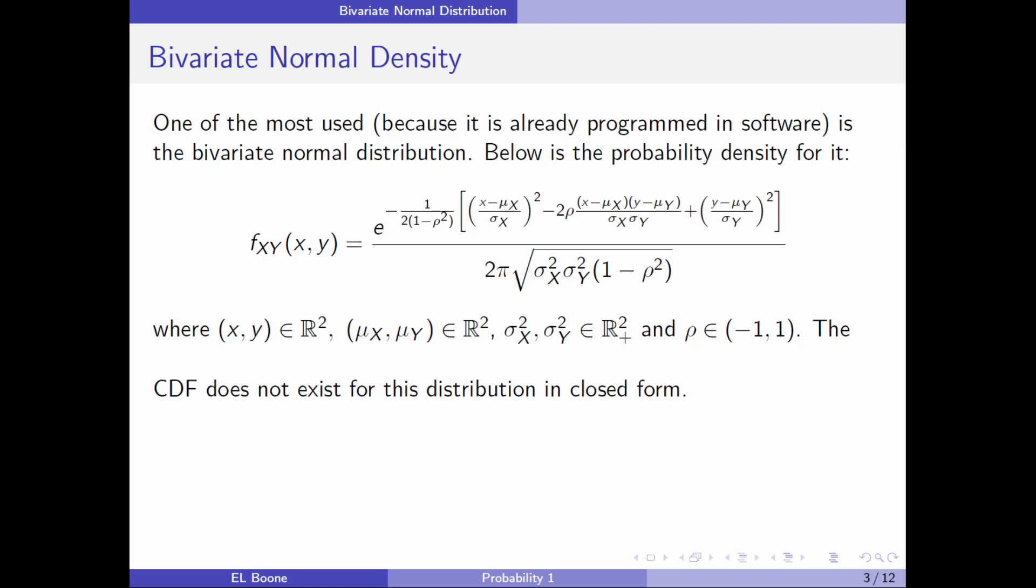It's so easy to use for continuous data. It's all over the place. If you have bivariate continuous data, this thing usually fits reasonably well. It may not be perfect, but don't worry about that at the moment. Here is the density below, and you can see it's kind of ugly, but we've dealt with ugly distributions before.